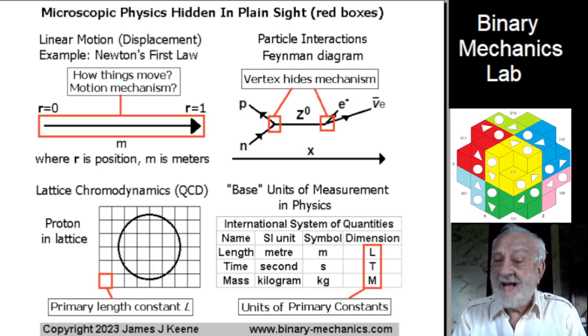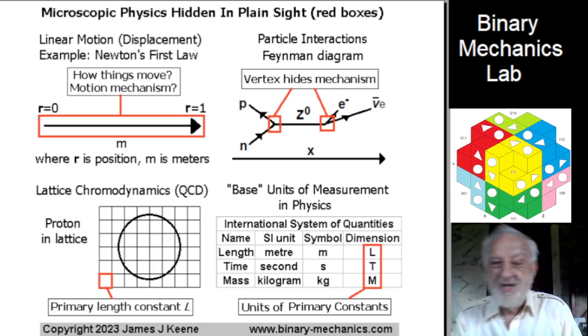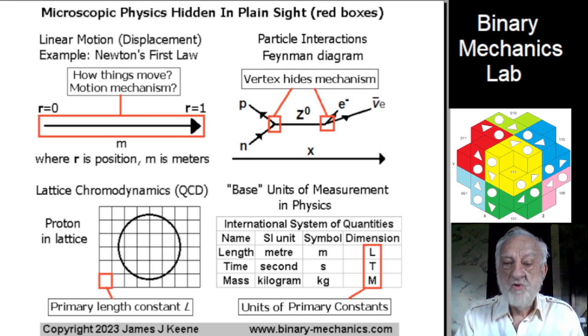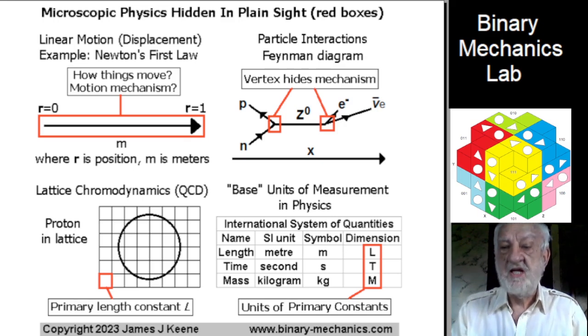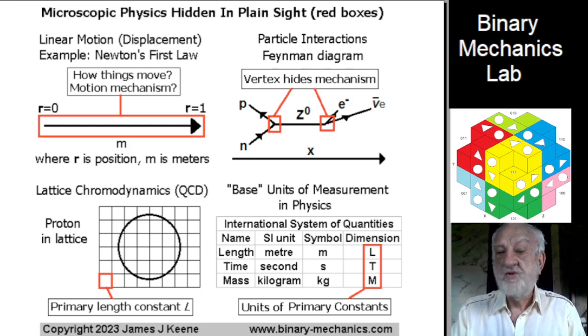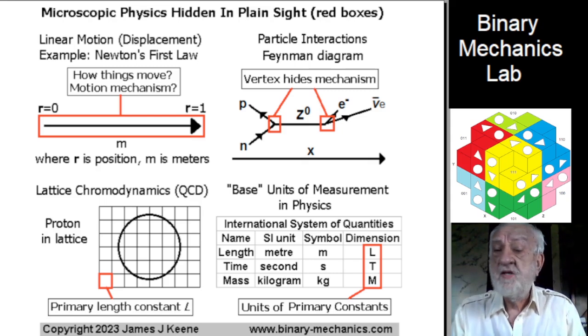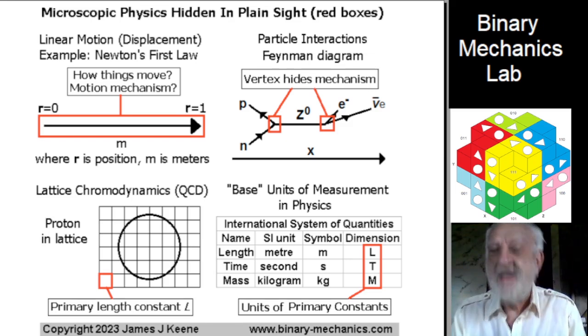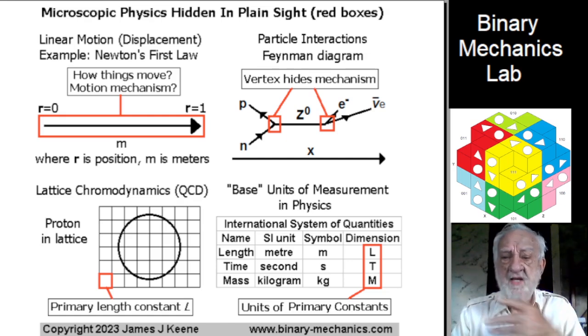Moreover, all possible particle interactions can be deduced from this analysis. Quantum chromodynamics, or QCD, attempts to model the protons as a set of interacting quarks and gluons. Computations are difficult, so a volume containing a 3D lattice of points is used. These simulations are known as lattice chromodynamics.